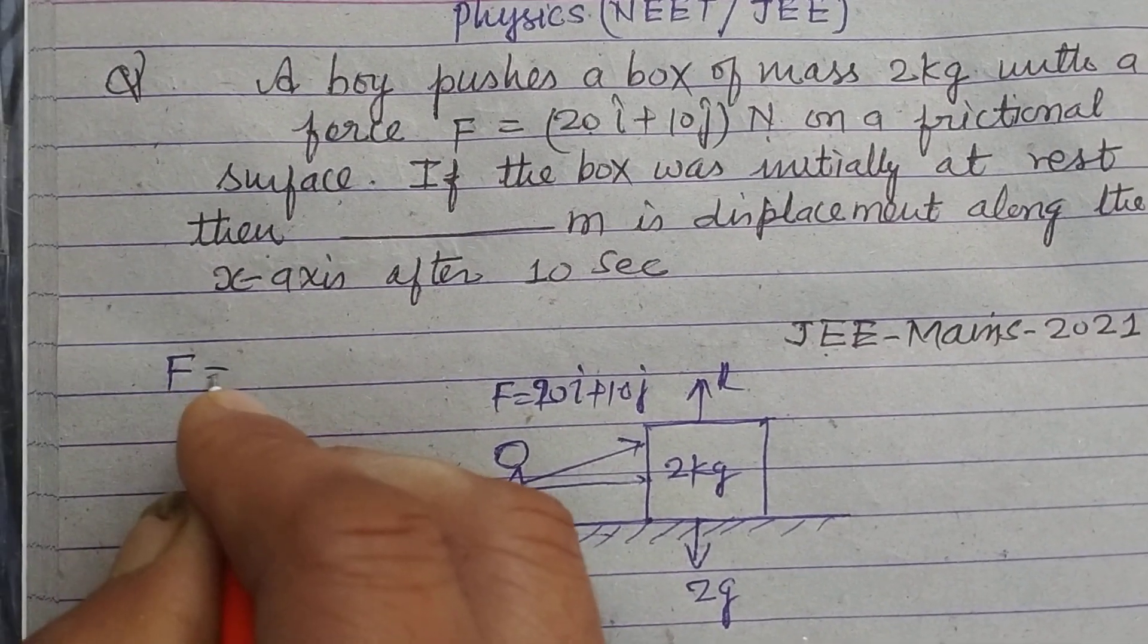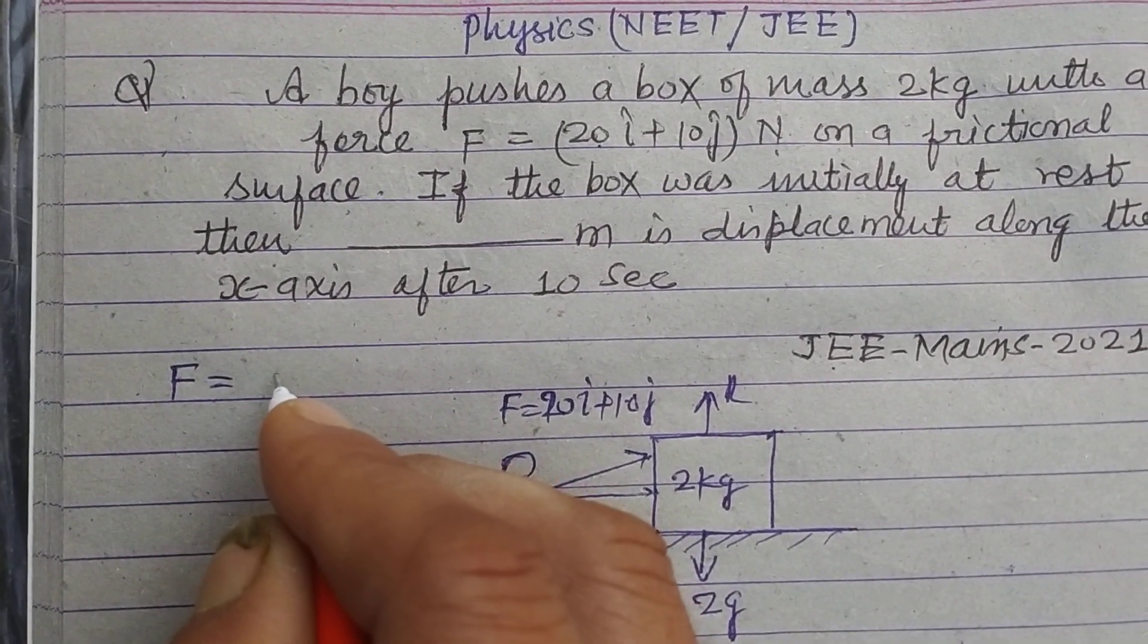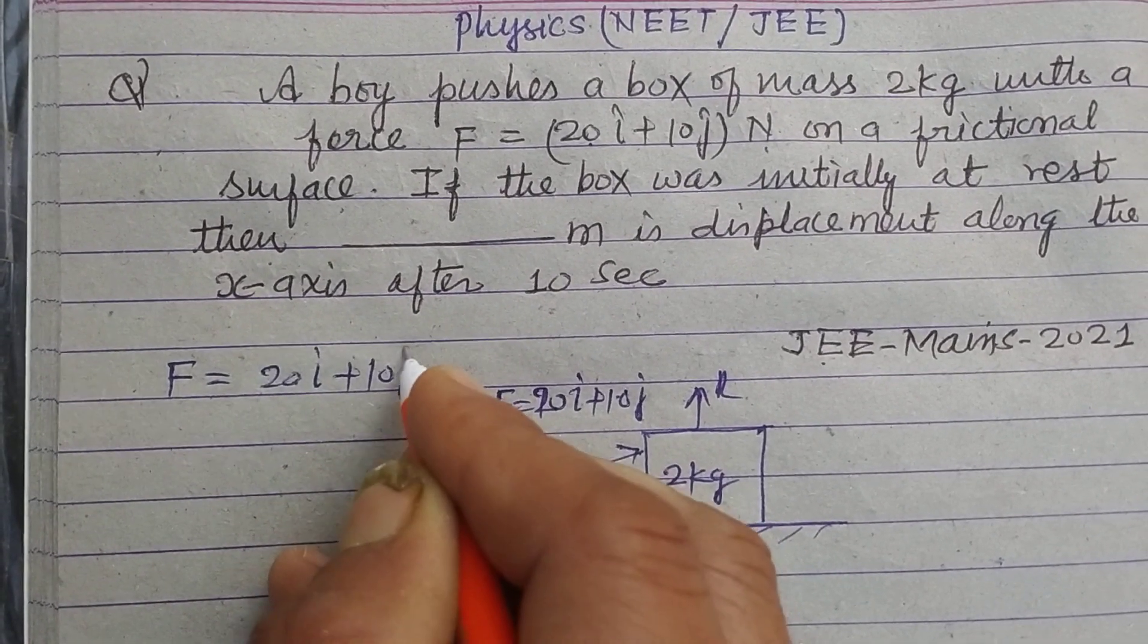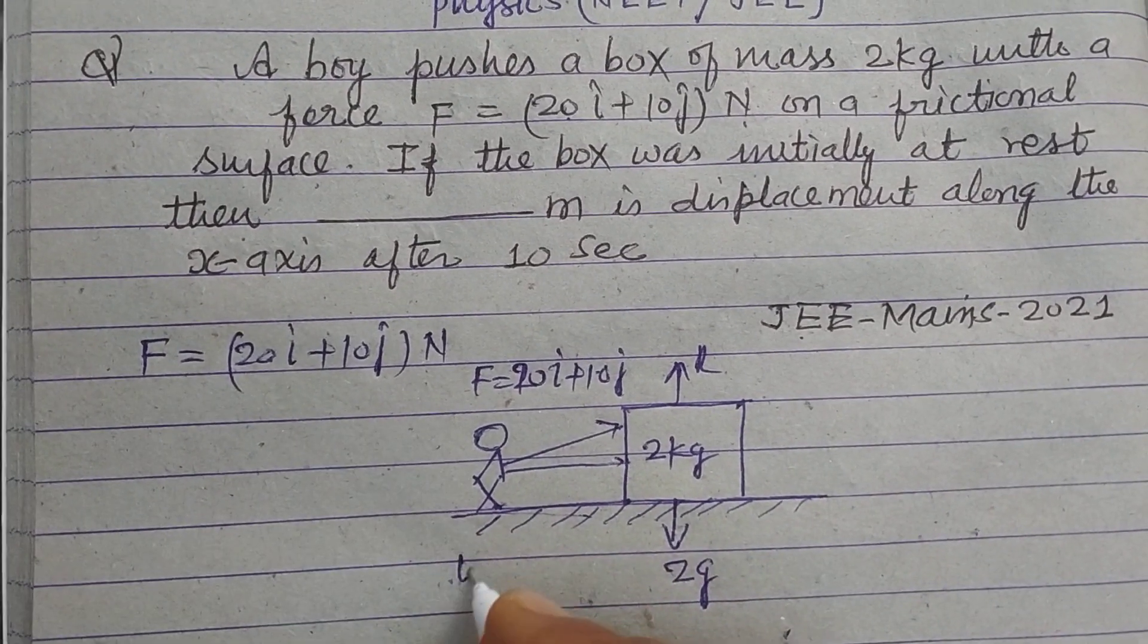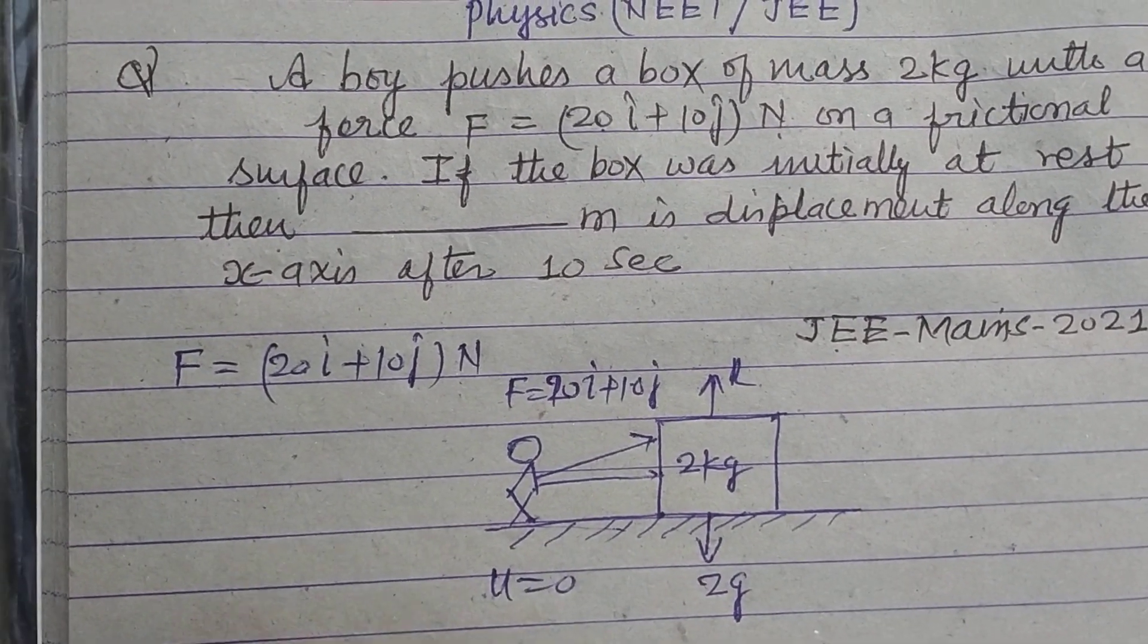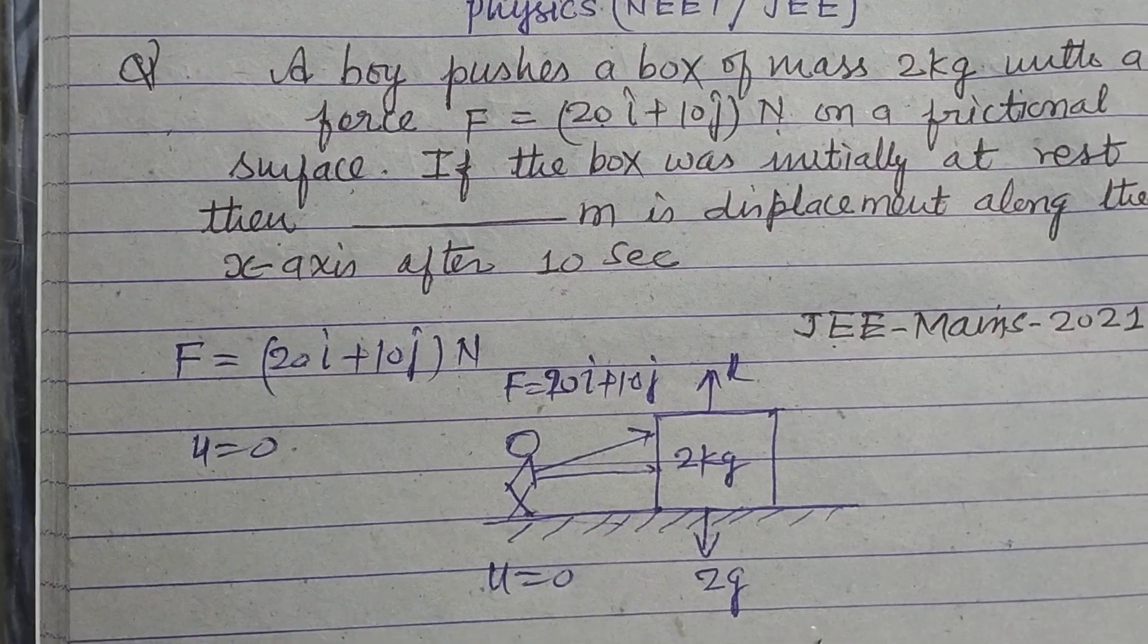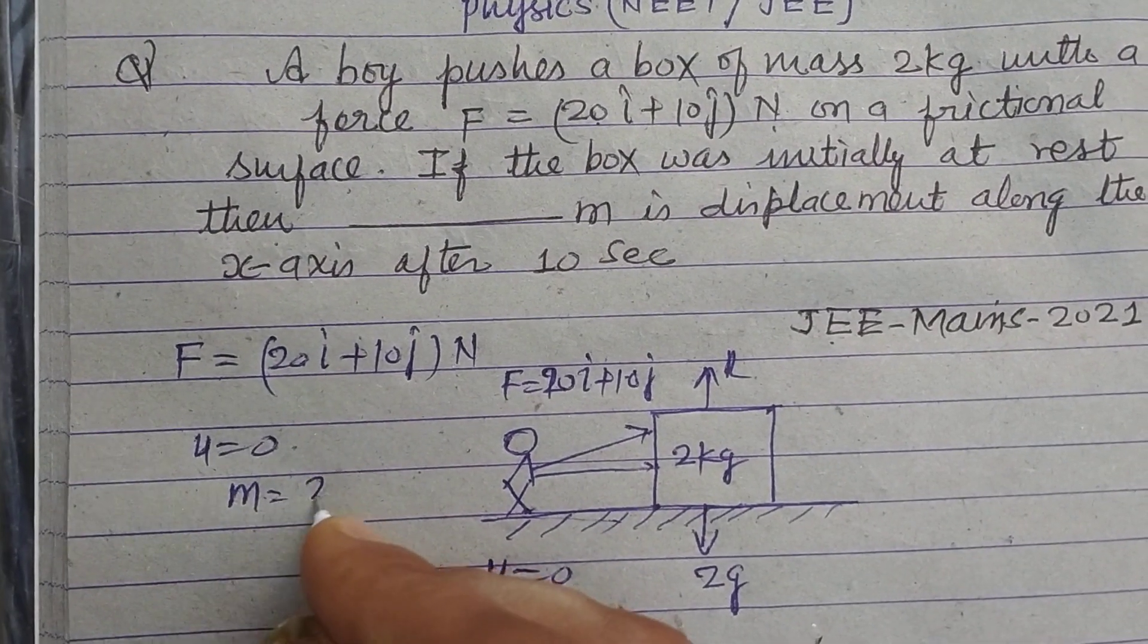So force on the block is 20 i cap plus 20 j cap newton and the box is initially at rest, u equal to 0, mass is given 2 kg.